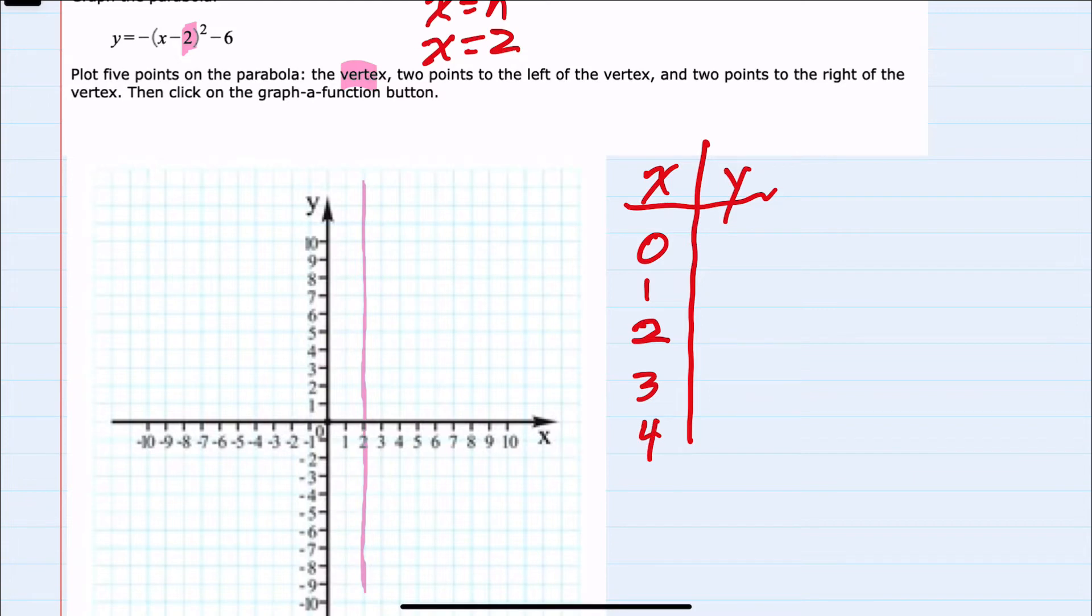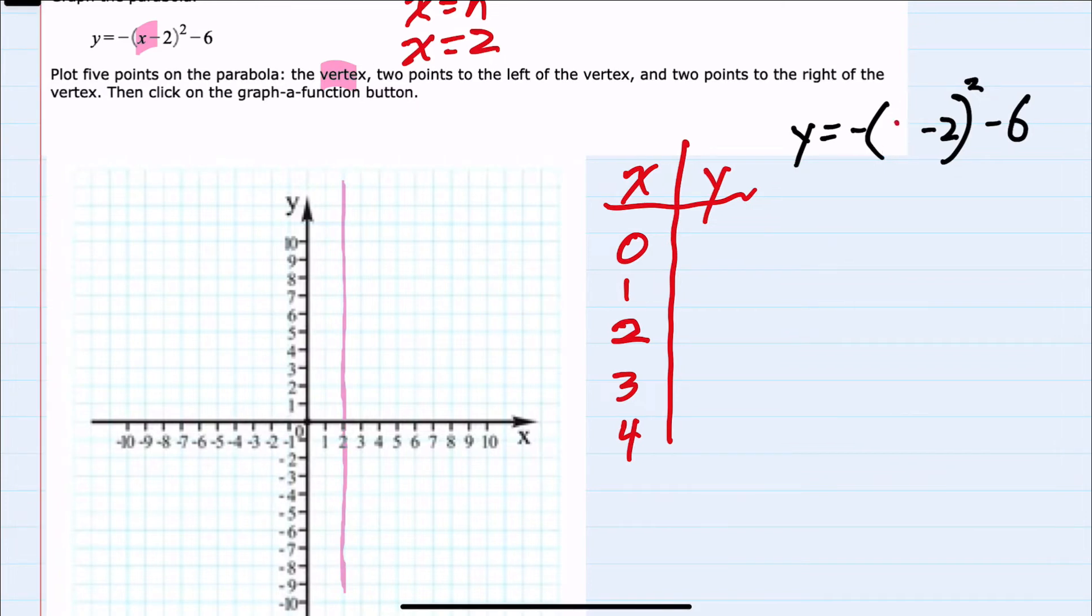Now that we have our x values that we want to plug in, we'll look back at our equation and replace x's with the values that we've identified here. So starting with the first which is zero. If I plug in zero for x I'll have here a negative minus two squared. Bring down the minus six.